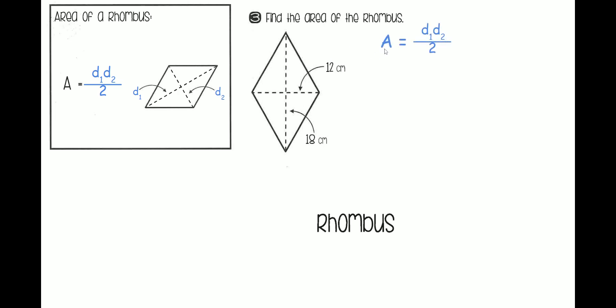So, let's try this example, rewriting our formula. Area equals diagonal 1. We're replacing that with this, 18. And you're multiplying it with diagonal 2, which is 12.